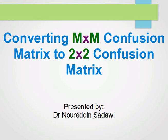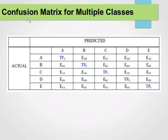Welcome again. In this video, I'm going to explain how to transform an M by M confusion matrix into a 2 by 2 confusion matrix. I'm going to be relying on my previous three videos on explaining what the confusion matrix is and how to extract some useful metrics from it. If you remember from the last video, we explained the confusion matrix for multiple classes and we had this one as an example.